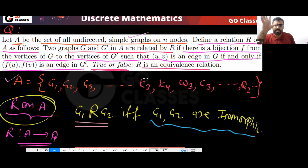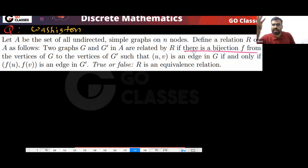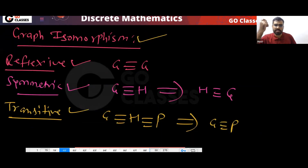In this question you can notice the definition of graph isomorphism is given. This is a standard university question — I think this is from Washington University. In the GATE exam, they can ask this type of question, but they will not mention the word 'isomorphism'. They will directly give you the definition of isomorphism.